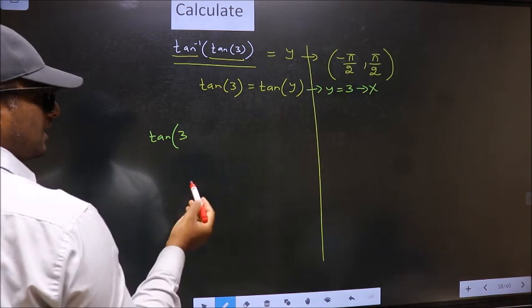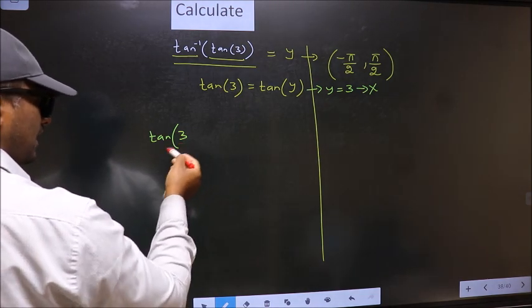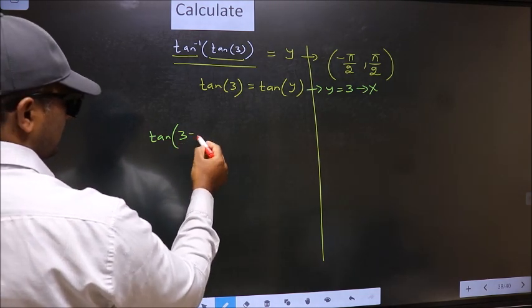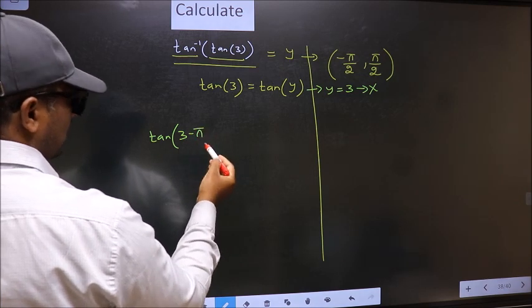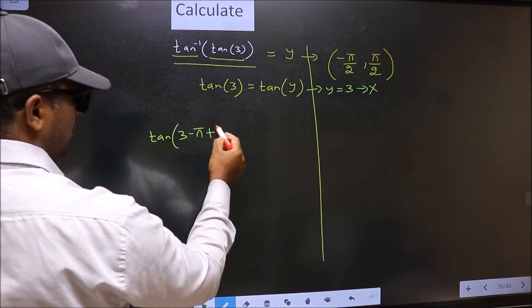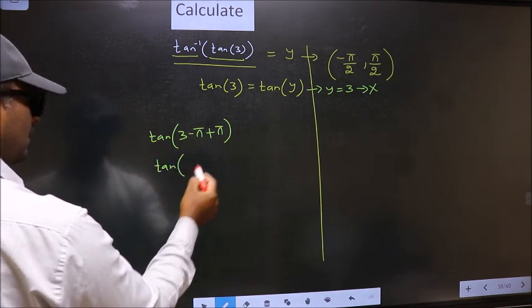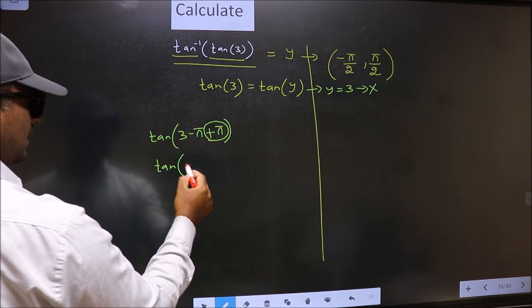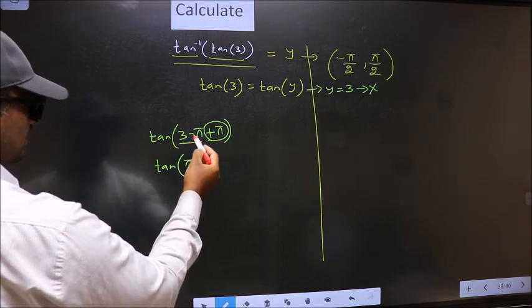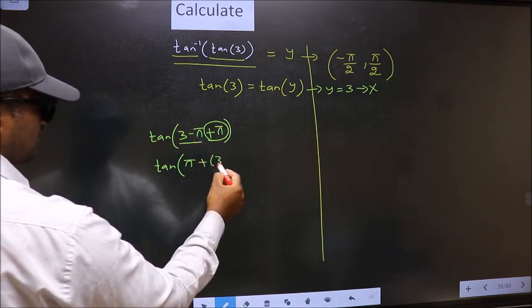3 does not lie in that interval, so we should decrease it. To decrease, I subtract pi. Whatever we are subtracting, we should also add the same thing. Now this pi I write at the start, followed by this, plus 3 minus pi.